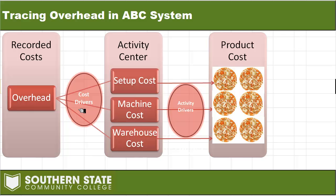To give you an example, I've got it broken down between setup cost, machine cost, and warehouse cost. Instead of gathering all overhead into one bucket, we actually split our overhead up between these activity centers based on a cost driver. For example, the cost driver for setup cost would be the number of setups we actually have to undertake when manufacturing our product. We then divvy these different buckets of cost out based on the activity undertaken, getting a product cost that's a more accurate reflection of how much overhead something is generating.